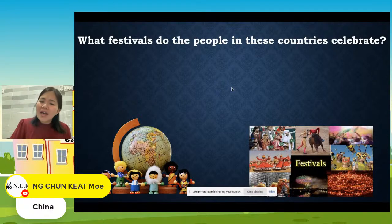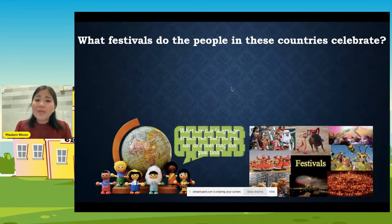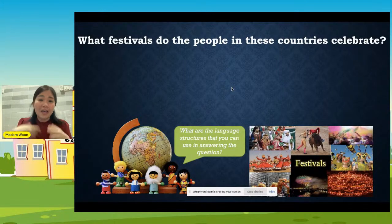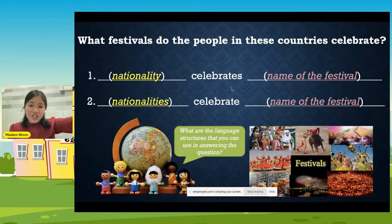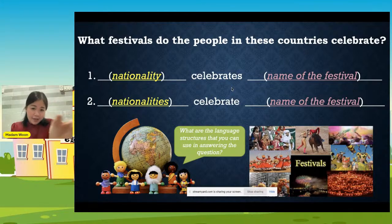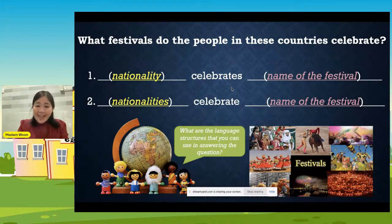So if anyone asks you, 'What festival do the people in your country celebrate?' — how are you going to answer? How are you going to write? Do you know the language structures you should use? Remember, we are learning English now. A very simple way: last week you learned nationality. You fill in the nationality in the first part, and then the name of the festival. There you get a sentence — who celebrates what festival.